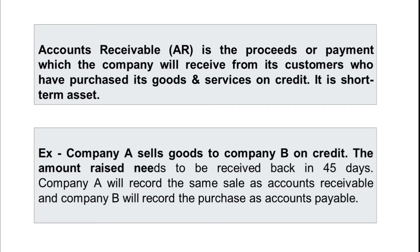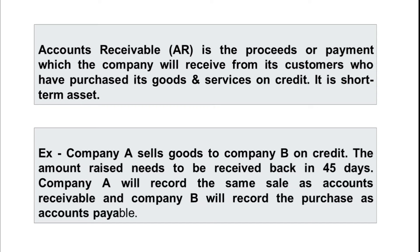We can understand this with an example where Company A sells goods to Company B on credit. Company A is the seller and Company B is the buyer. The amount needs to be received back in 45 days, which is the granted credit period. Company A will record this entry as accounts receivable, and Company B, which has to make the payment, will record this entry as accounts payable, because entries are made on the day the transaction is done irrespective of when the cash is received.